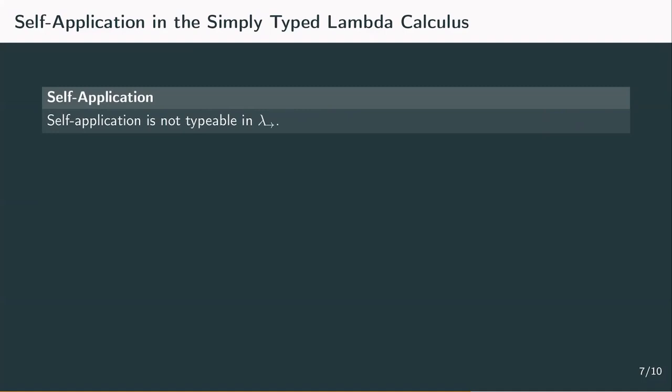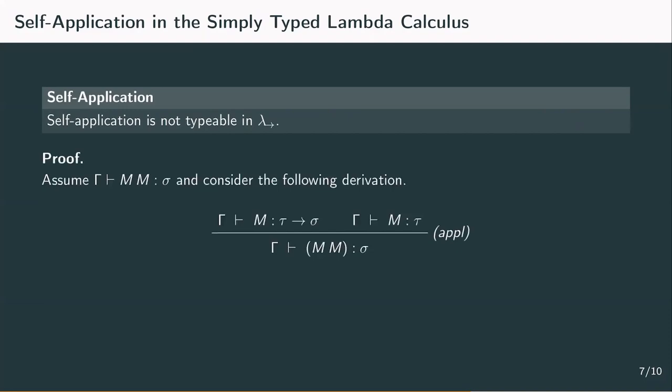Assume we have a type sigma for the application of M to itself. Then, the derivation rules require that there is some type tau such that M is of that type for one premise and M is of the type tau to sigma for the other premise.